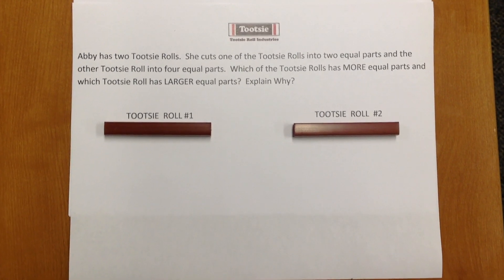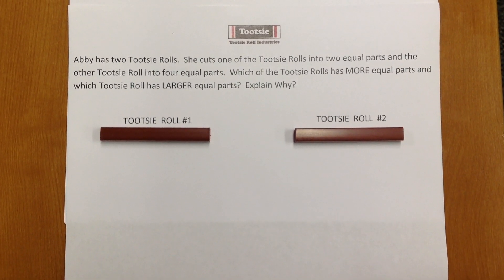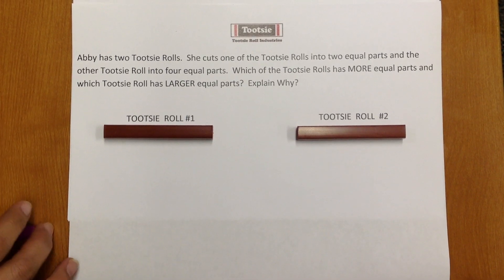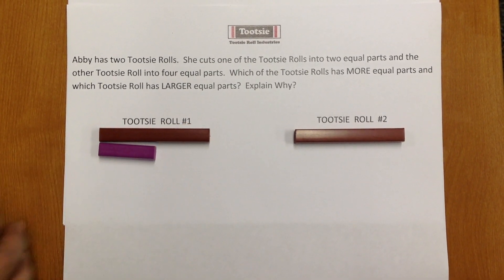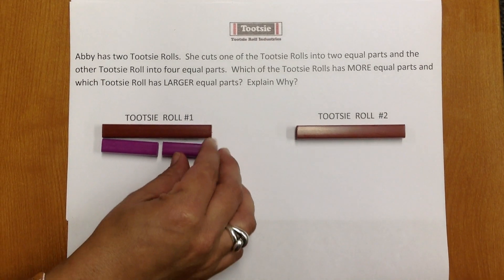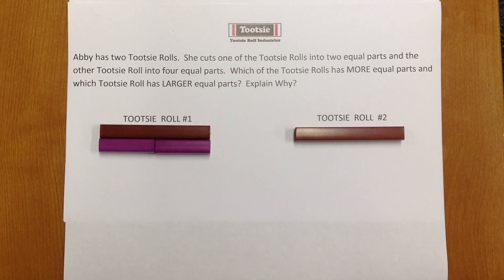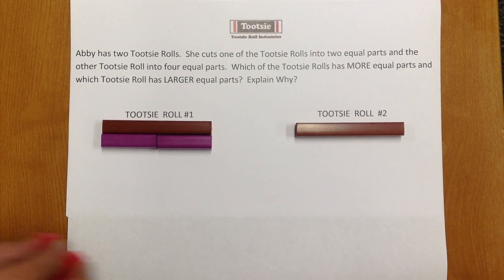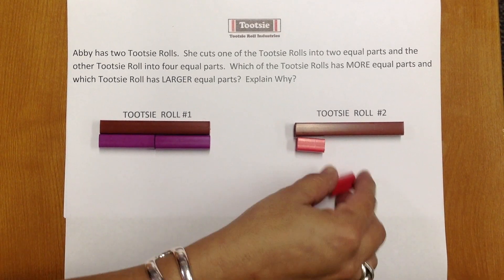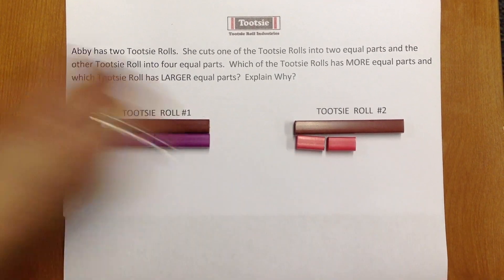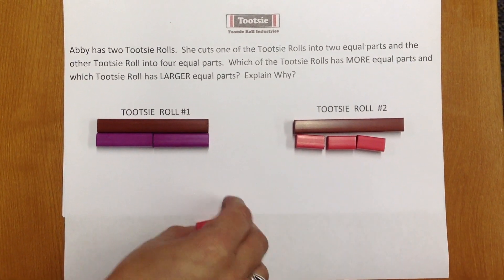Tootsie Roll number one is going to be cut into two equal parts. To model that, I'm going to use two purple Cuisinaire rods. Tootsie Roll number two is going to be cut into four equal parts, and for that I'm going to use the red Cuisinaire rods.